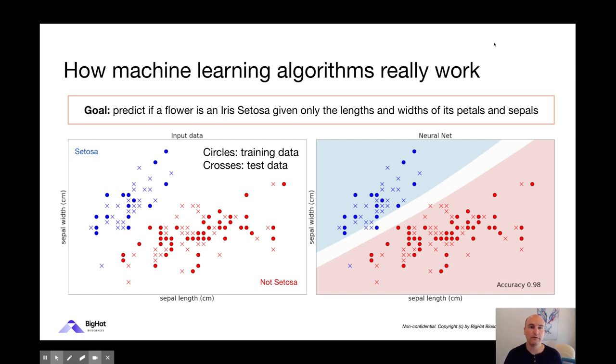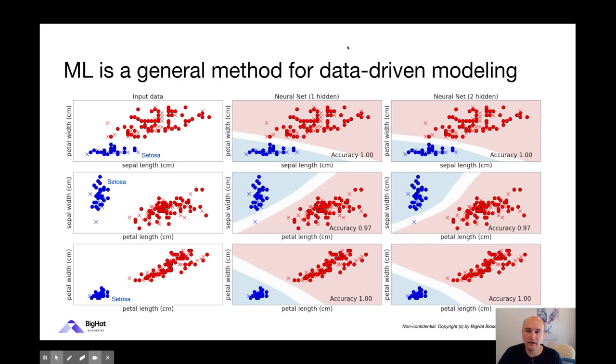The red region are all the points in space that it believes would be not a setosa. The blue region indicates all the areas that are going to be flagged as setosa. The fact that the vast majority of the blue crosses and red crosses are in the right color domains tells you it's doing a very good job at learning this function, but it's not perfect. There is one blue point that's far on the lower left here that it gets wrong. That's an example of the challenge: there are no other points near it in space. It had a hard time learning. It built a relatively simple model that looks mostly like a separating line, and because of that, it does make a mistake.